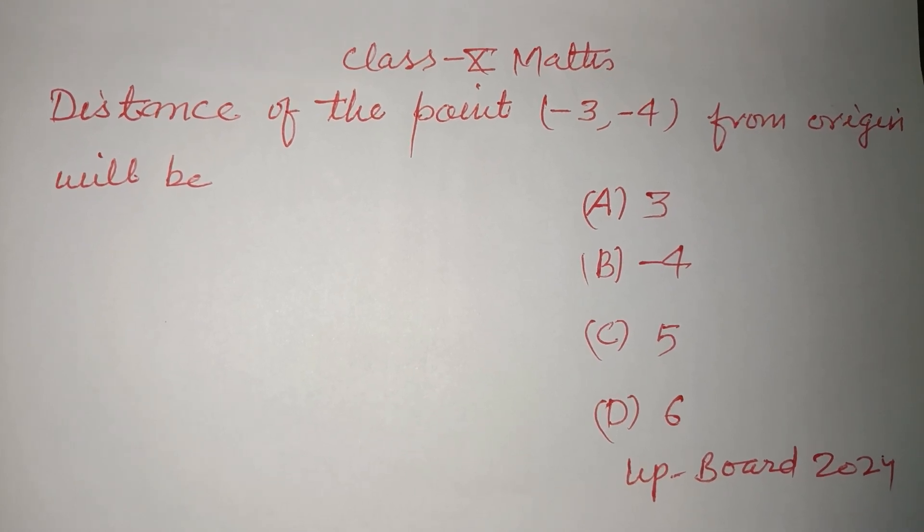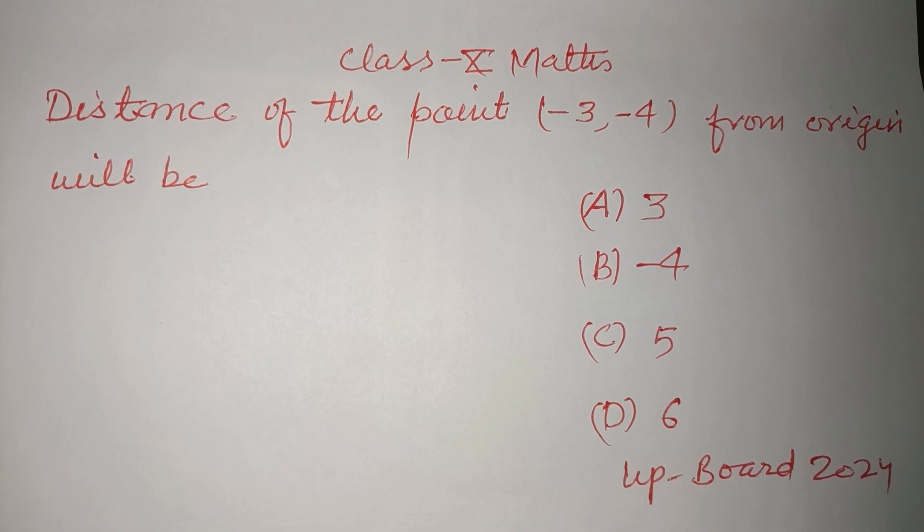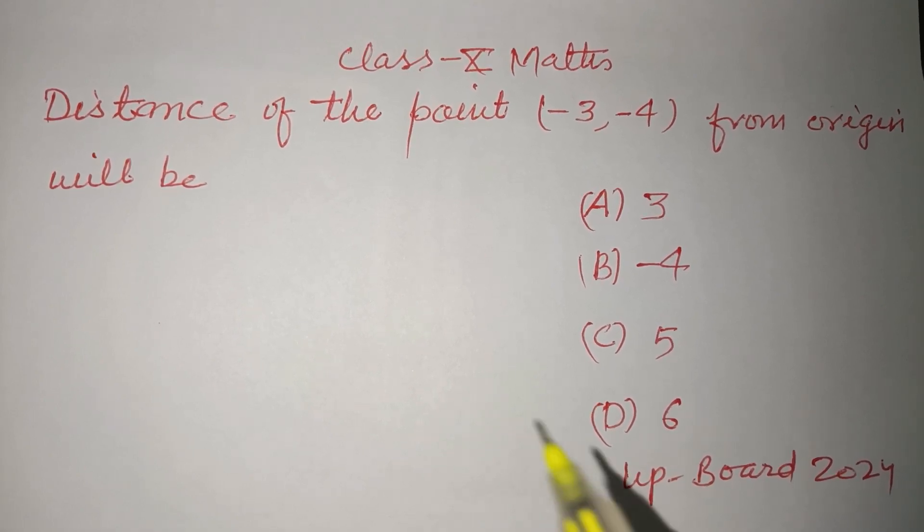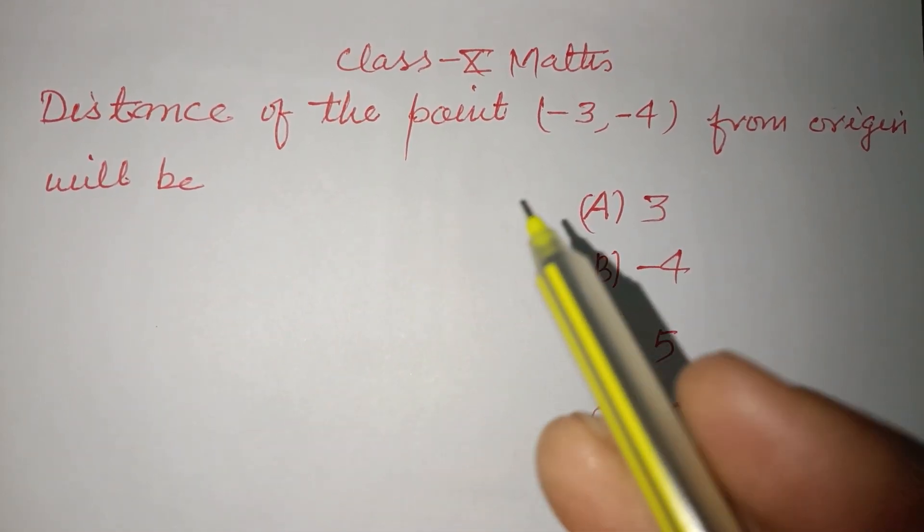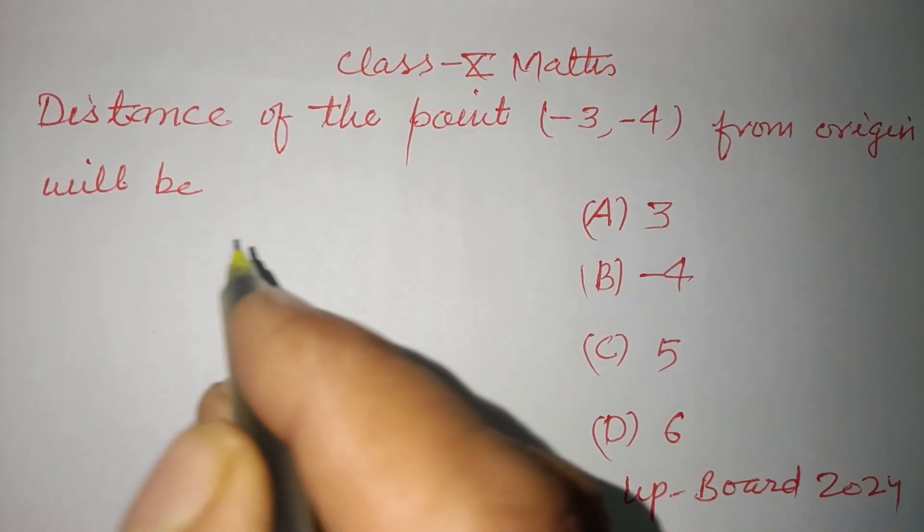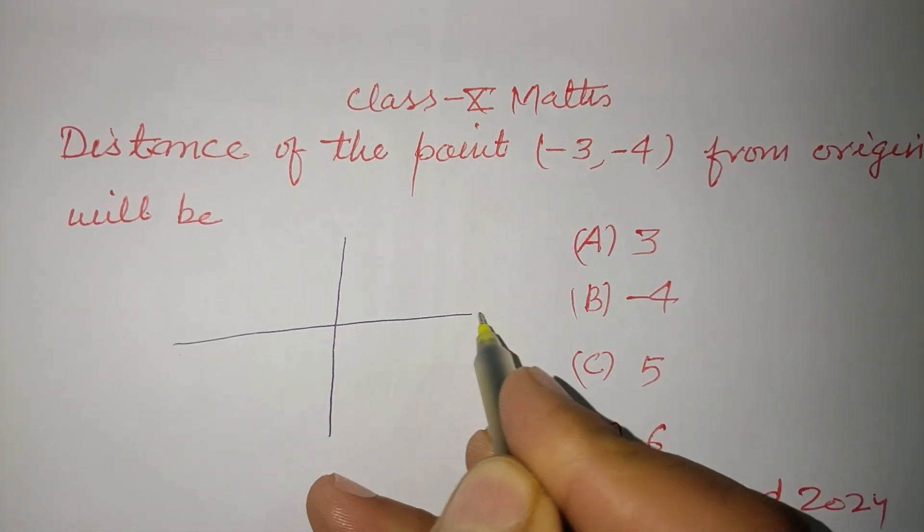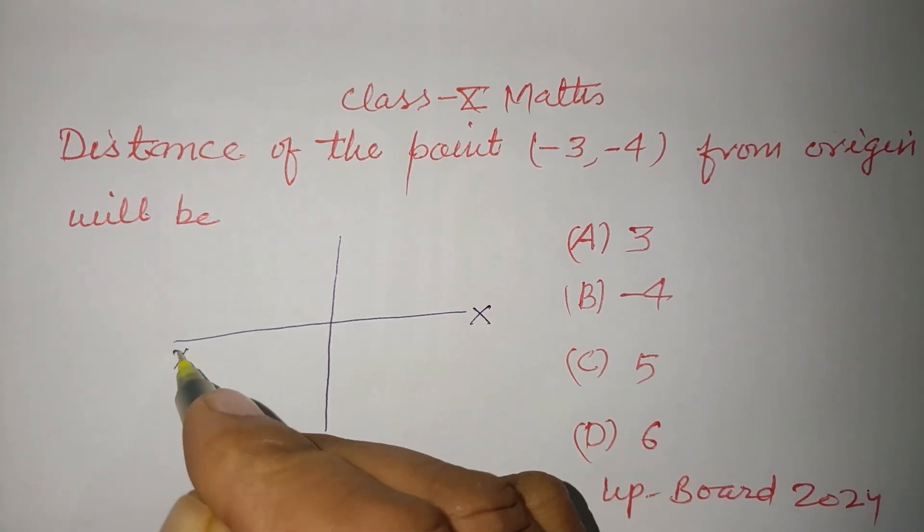Hello dear students, welcome to this YouTube channel. This is a question from UP Board exam 2024. Distance of the point (-3, -4) from origin will be. So students, here we have a Cartesian plane X-X' by Y-Y'.